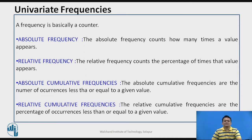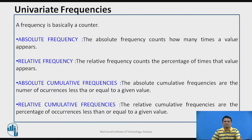Let us now look at analysis in terms of frequencies. When analyzing univariate data, frequency refers to repetition — a counter that counts how many times a certain value is repeated. For univariate data you can have four different frequency values. The first is absolute frequency, which simply counts how many times a particular value appears in the data.